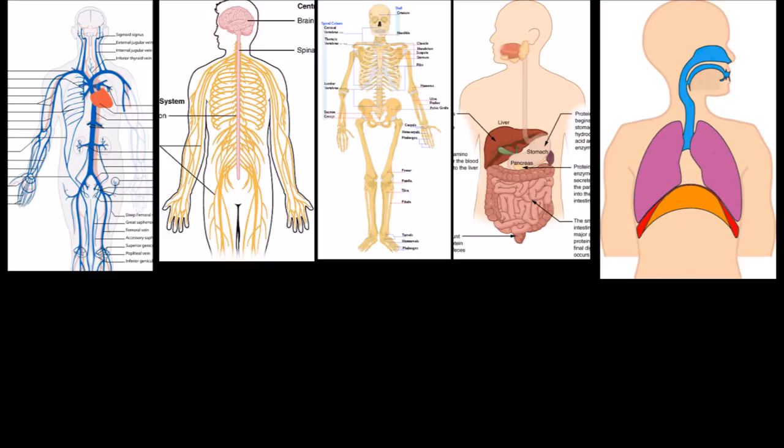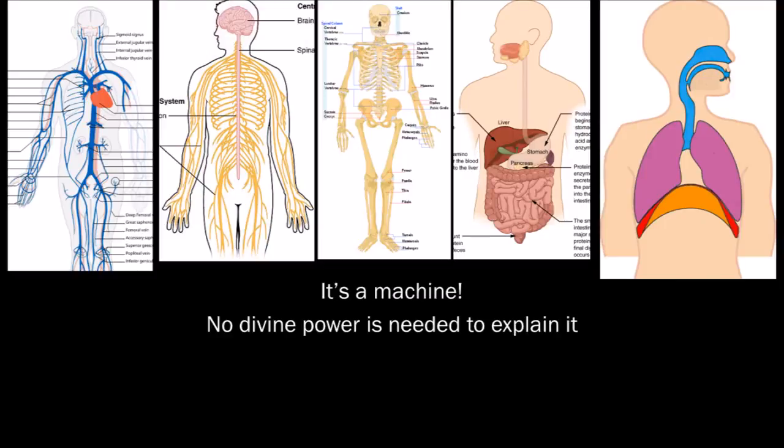We can explain how this all works. Scientists have figured most of this out a couple of centuries ago. Actually, they were looking for the human soul. They were looking for the maker. They were looking for God. While doing that, they figured out the anatomy of the human body, which made them wonder: where is God? The scientists ran into a surprise. The human body is a machine. So that means no divine power is needed to explain it.